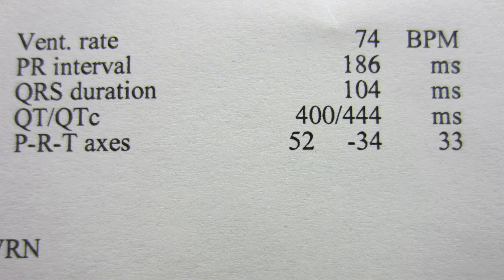Once you understand how to calculate it yourself, you're allowed to look and see what the computer got. They got negative 34, which is again left axis deviation.